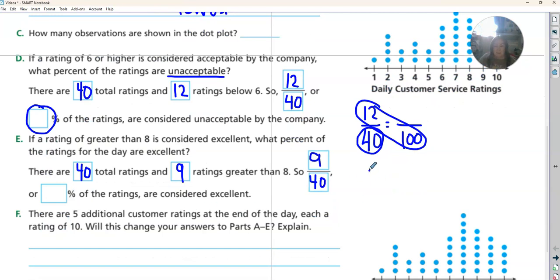So nine out of 40 are excellent. Now we're going to do that as a fraction, nine out of 40. We want to know the percent. Percents are always out of 100, so we're going to do nine times 100, divide that by 40, and we'll get that percent of excellent ratings.